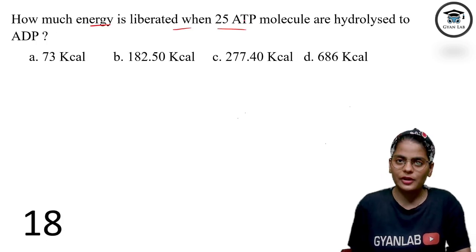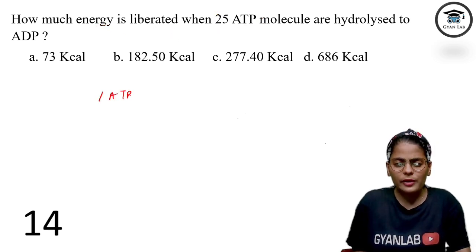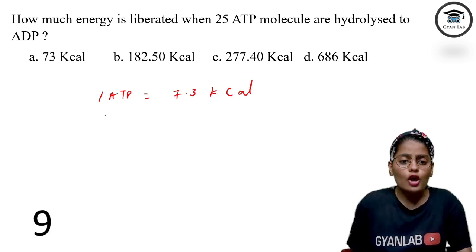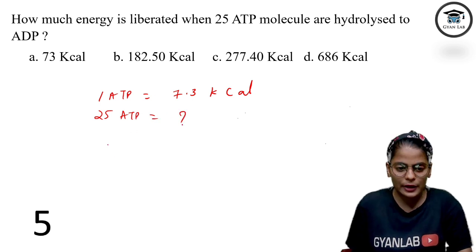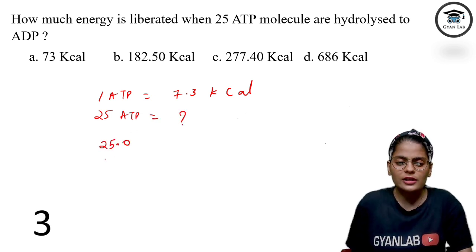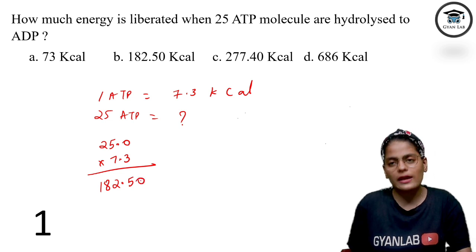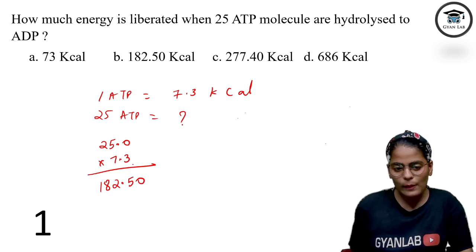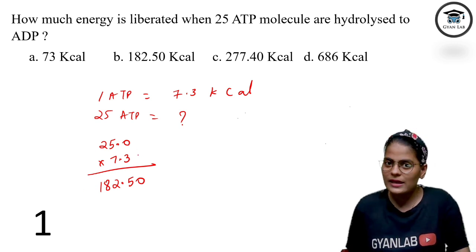How much energy is liberated when 25 ATP molecules are hydrolyzed? One ATP molecule when broken releases 7.3 kilocalories of energy. So for 25 ATP molecules, multiply: 25 × 7.3 = 182.50 kilocalories. You can do this multiplication yourself or I can show you. The answer is 182.50 kcal.